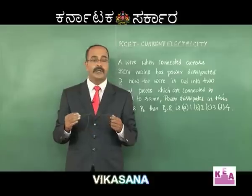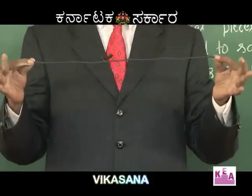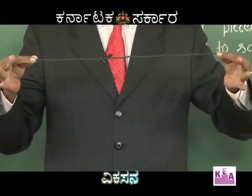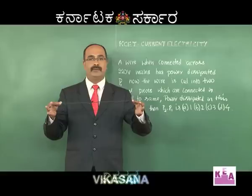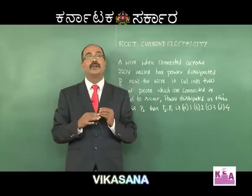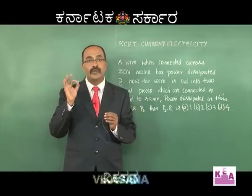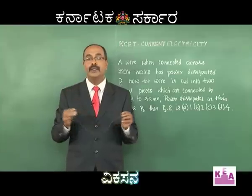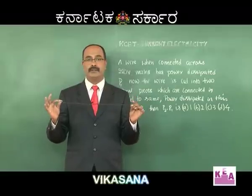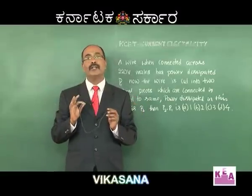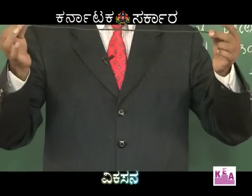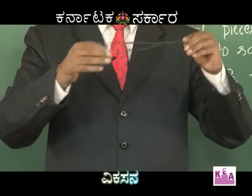Assume this is the wire and I am supplying 220 volts AC. Power dissipated is given by P = V² / R. P is inversely proportional to resistance. So P1 = (220)² / R.